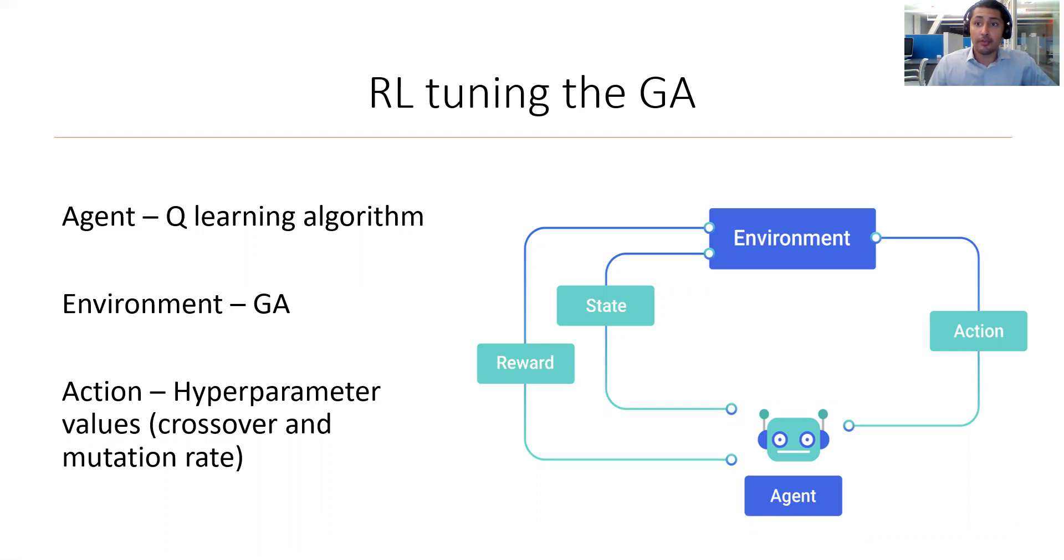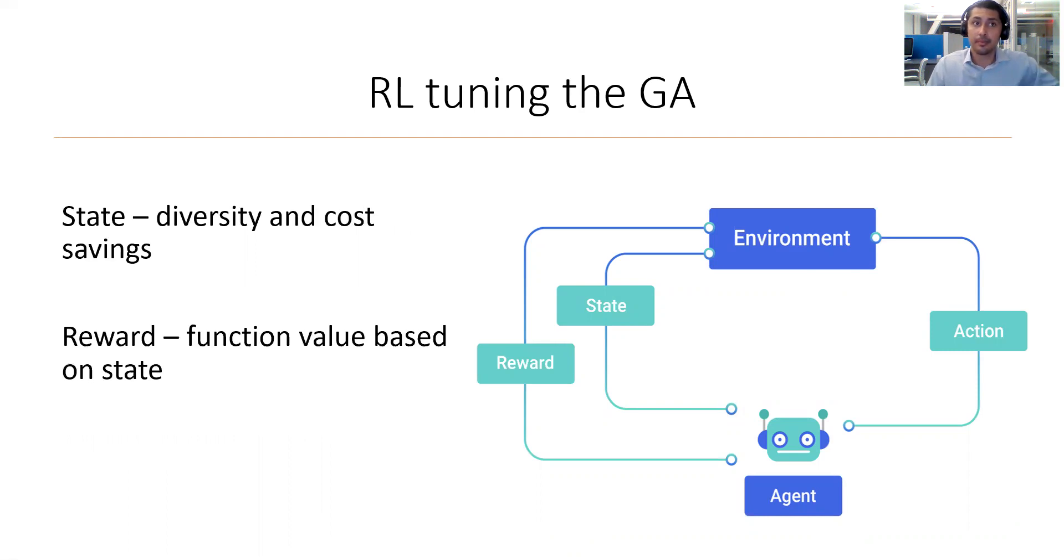Now, so for our approach, our agent was following a Q-learning algorithm, which I will explain in a bit. The environment was then the accelerated genetic algorithm that was solved in the VRP. The agent interacted with the environment through its action, which was setting hyperparameter values. Those values being actually the crossover rate and the mutation rate. After the agent conducts its action, it observed the state and the reward. The state being the cost savings incurred from the action and the diversity of the population as well. And then a reward, which would be the function value based off the state.